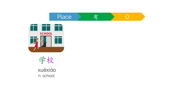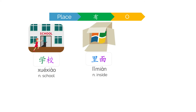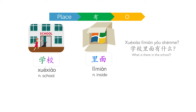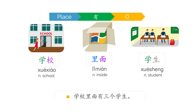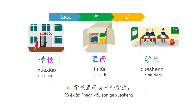我现在在学校。I'm at school right now. 里面。学校里面有什么? What is there in the school? 学校里面有三个学生。有 means 'to have.' As the slow motion technique says, what happens first, we say it first. We first see 学校, and then we see 里面. Then we can see three students inside. So 学校里面有三个学生 means there are three students at school.